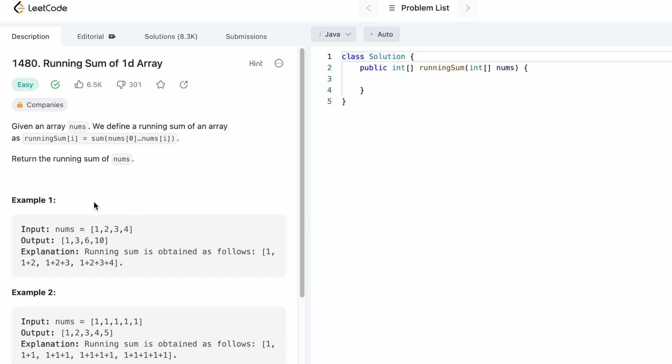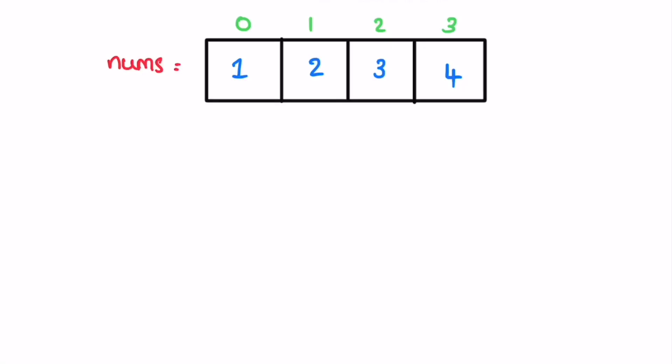Now let's take a look at this example and see how the question can be solved. I've taken the same example given to us — this is the nums array. Instead of creating a separate output array, we're going to change the elements inside the input array itself and return it. We have to calculate the running sum of elements. The sum of the first element will always remain the same since there is no element to its left. So we start our iteration from the second element, with i pointing at index one.